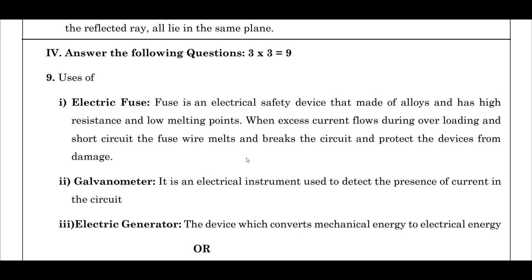Second, galvanometer: it is an electrical instrument used to detect or measure the presence of current in the circuit. Electrical generator: the device which converts mechanical energy into electrical energy.